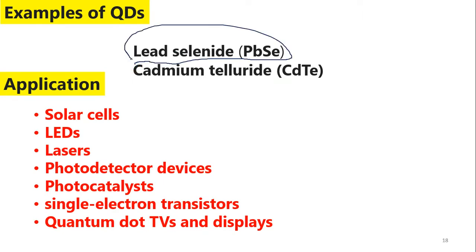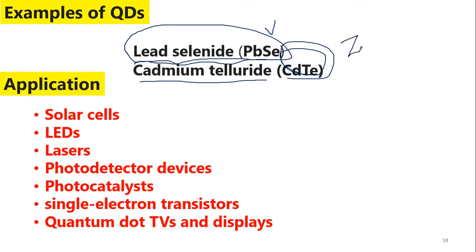There are many types of quantum dots. Lead selenide can exhibit multiple exciton generation. Cadmium telluride is another common quantum dot material that people use a lot. There are also other quantum dots such as graphene quantum dots and perovskite quantum dots, but lead selenide and cadmium telluride are the most common examples.